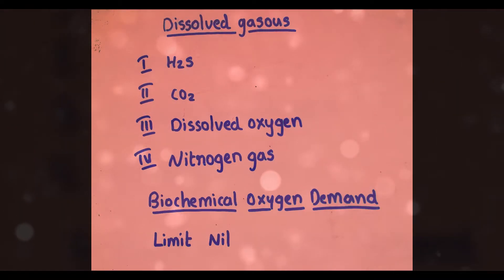Next parameter is Dissolved Gases. The main items are: 1) Hydrogen Sulfide (H2S), 2) Carbon Dioxide (CO2), 3) Dissolved Oxygen, 4) Nitrogen Gas. Hydrogen sulfide will give bad taste and odor. CO2 indicates biological activity and causes corrosion in pipelines.